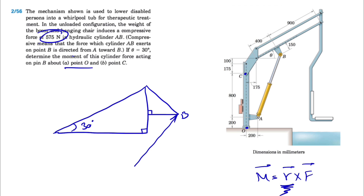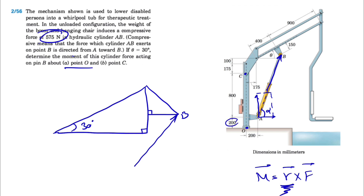The position vector r can be any line that connects the point we're trying to find the moment about. For part A, the moment about O, we can pick whatever is easiest. Going from O to A seems straightforward, as long as we can resolve the force into x and y components. If we call these the x and y components and find the angle alpha, we can use the 2D shortcut for finding the moment.